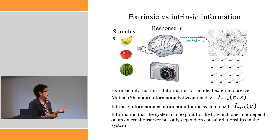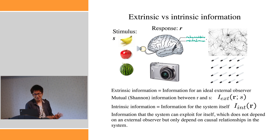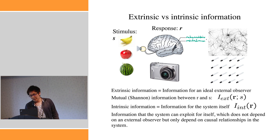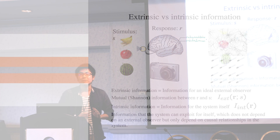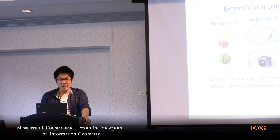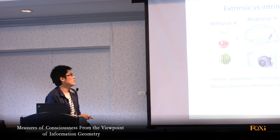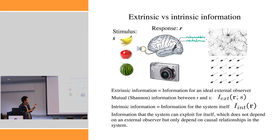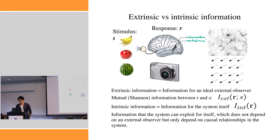In terms of extrinsic information, we cannot distinguish the brain from the digital camera. The digital camera generates much extrinsic information: when we see the states of the billions of photodiodes, we can extract much information about the external world. In this sense, the brain and the camera are the same. But in the camera, there is no intrinsic information, because inside the camera there is nothing that can accumulate all the information generated by the photodiodes — they just independently work, regardless of each other, with no communication between them.